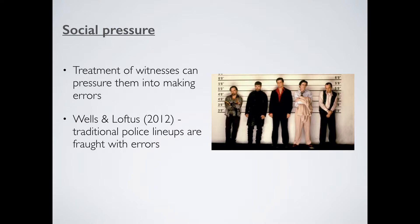Wells and Loftus — the same Loftus from Loftus and Palmer — put together a study where six people stand in a line and an eyewitness is asked which one committed the crime. In reality, the actual perpetrator was not in the lineup at all; it was six random people. But the eyewitness picked someone anyway, saying 'I think it's number two.' The reason is she felt pressured — with two policemen either side of her, feeling anxious, she felt she had to pick someone rather than admit the person wasn't there. This could lead to guilty people going free and innocent people being incarcerated. Social pressure is a really huge area of eyewitness testimony.